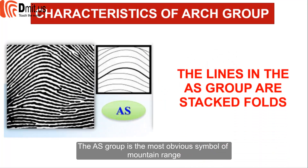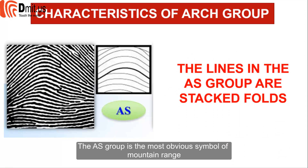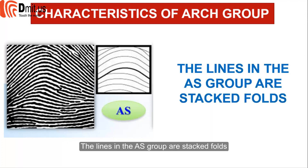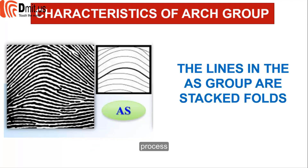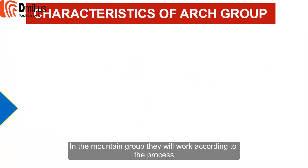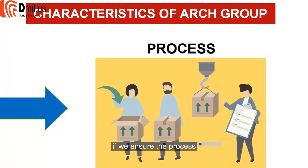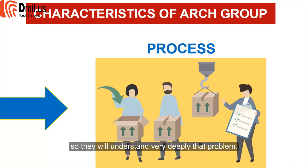The characteristics of the Arch Group: the AS group is the most obvious symbol of the mountain range. The lines in the AS group are stacked overlapping folds. In the mountain group, they will work according to a process, step by step. If the process is ensured, they will do extremely well and understand problems very deeply.